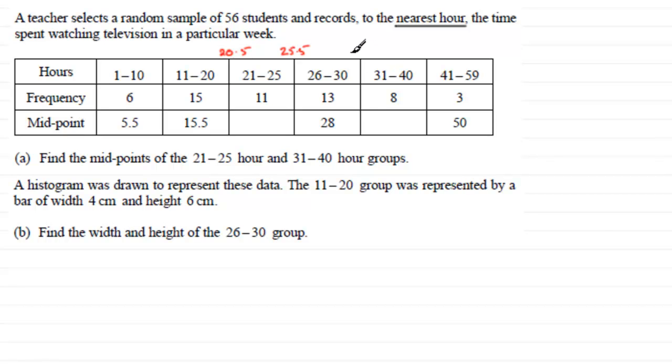And the same with this interval here, this goes from 30.5 to 40.5. So when it comes to finding the midpoints, we should really make sure we just add these two values together and divide by 2. So if you add 20.5 and 25.5 together, you're going to get 46. And if you divide that by 2, you end up with 23. So 23 is the midpoint there.